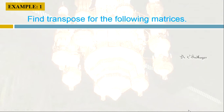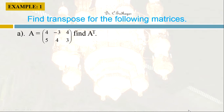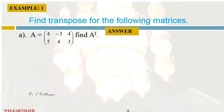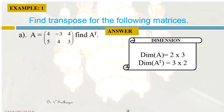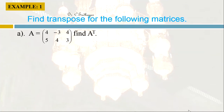Now let us take an example: find the transpose for the following matrices. We are having two or three varieties of matrices that we can see one by one. The first one is A equal to [4, -3, 4; 5, 4, 3] — that is, we are having two rows and three columns. This is not a square matrix. The dimension is 2 by 3, so A transpose dimension will be 3 by 2. Let us open an Excel sheet and see how to find the transpose for this matrix.